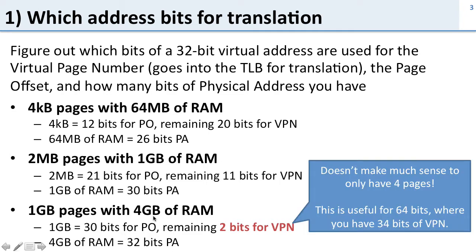This doesn't make much sense — we only have four pages because each page is one gigabyte and we have four gigabytes of memory. Where this page size makes a lot more sense is with a 64-bit application, which can address a huge amount of memory. Then you can have thousands and thousands of one gigabyte pages.